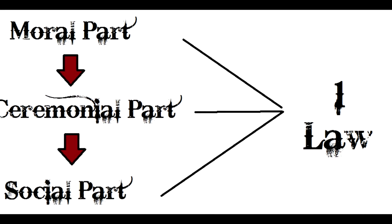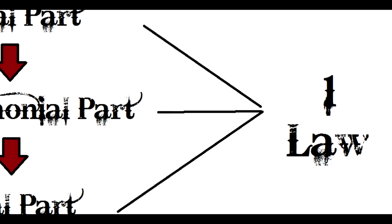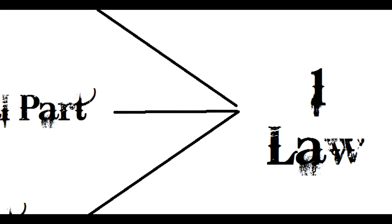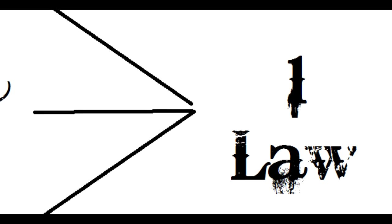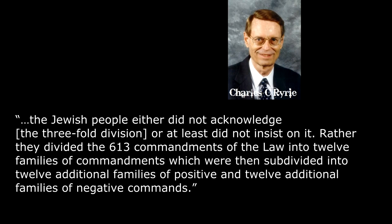But even though I've just been talking about the Law of Moses as though it had three distinct parts, and although it's common for teachers to divide it like that for the purpose of analysis, it's important to realize that the Law of Moses is actually a single and indivisible unit. All 613 rules functioned as one, and I can't stress that enough. In Basic Theology, Charles C. Ryrie states that the Jewish people either did not acknowledge the threefold division or at least did not insist on it. Rather, they divided the 613 commandments of the law into 12 families of commandments, which were then subdivided into 12 additional families of positive and 12 additional families of negative commands.